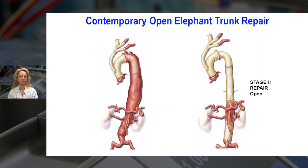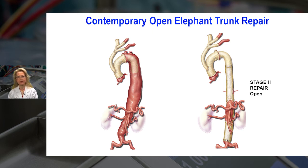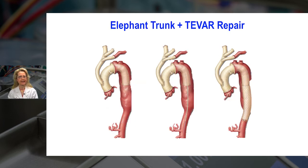A lot of times we use the term elephant trunk repair. This is when we have already replaced the proximal aorta and come back a few months later to replace the thoracoabdominal aorta by connecting the prior graft from the proximal repair into the new graft used for the second stage repair. In case the pathology is not very extensive, endovascular techniques can help us, and the second stage can be done with endovascular repair.